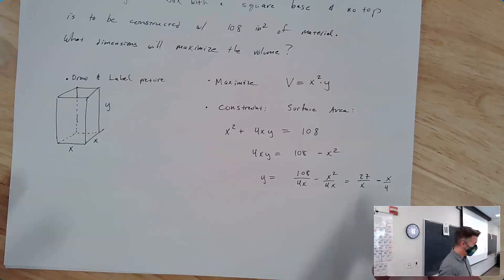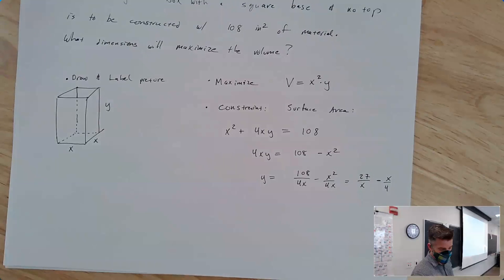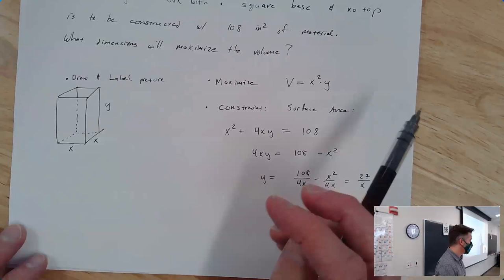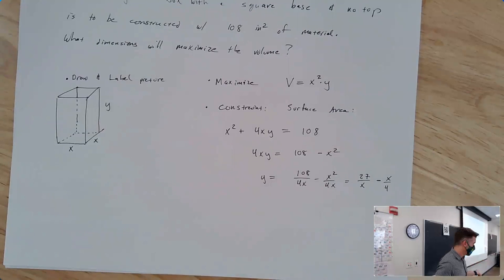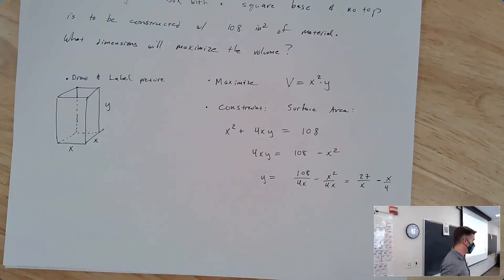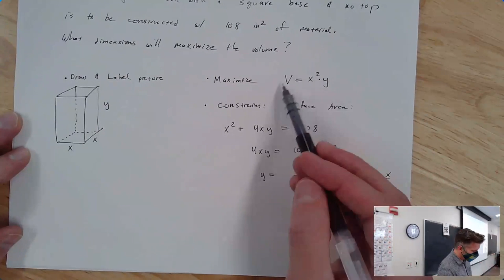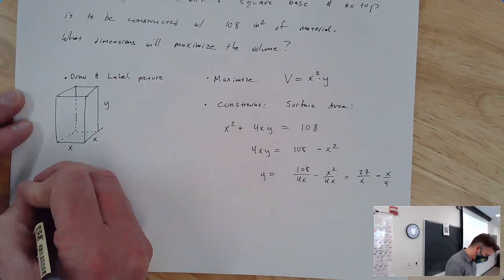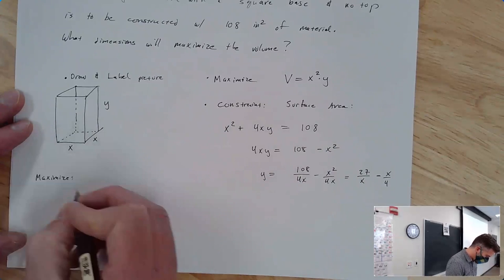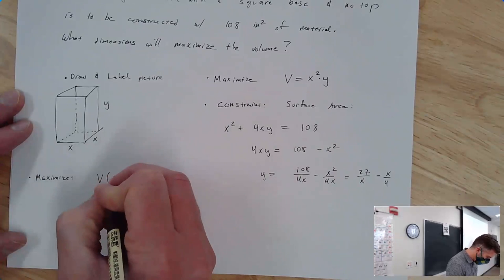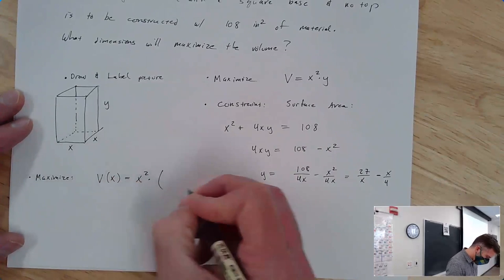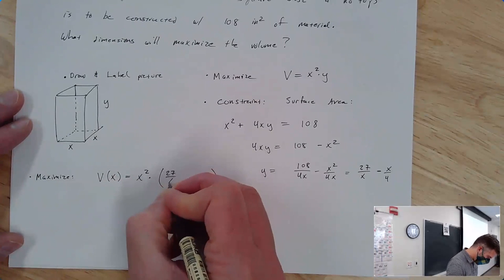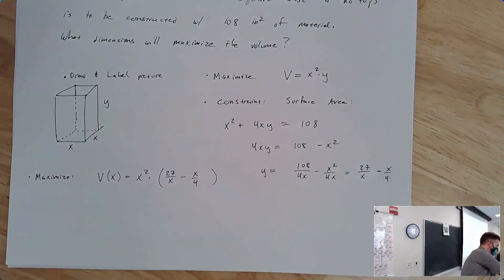The whole reason we did this is because the thing we're trying to maximize is a function of two variables. In this class, we can only maximize functions of one variable — in Calc 3 you'll learn to maximize functions of two variables. So we're going to write this function as a function of one variable. We want to maximize the volume as a function of x, which is x squared times y. Let's plug in for y.